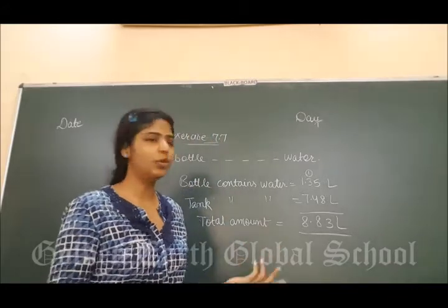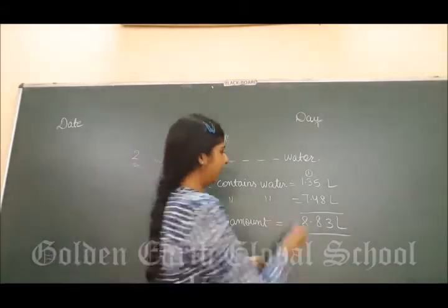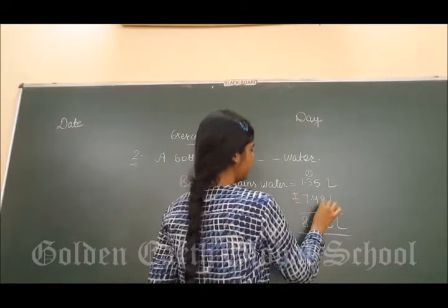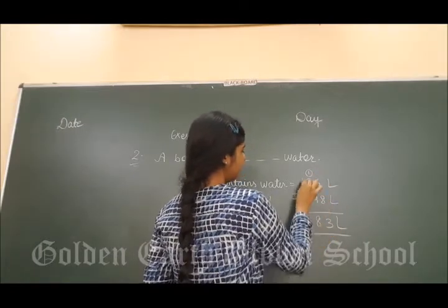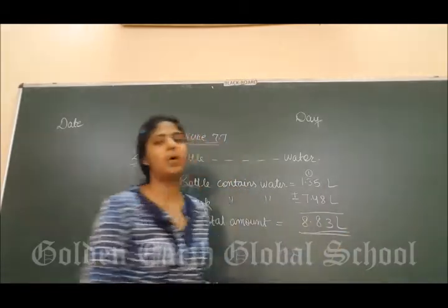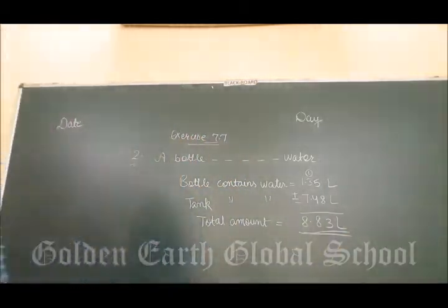Simply, when you look at total, what do you have to do? Addition. So, add both the values. 5 plus 8 is 13, 3 plus 1 is 4, 4 plus 4 is 8, 1 plus 7 is 8. So, the total amount of water is 8.83 litres.